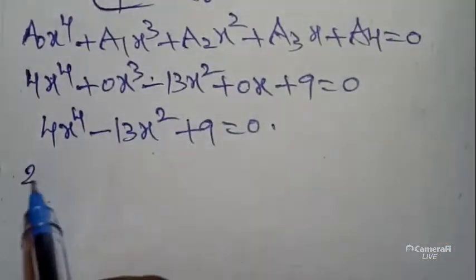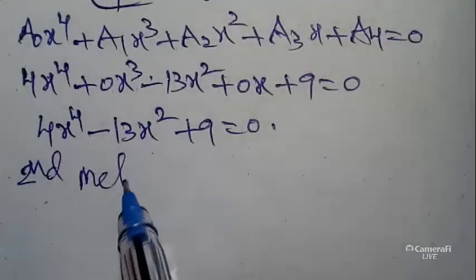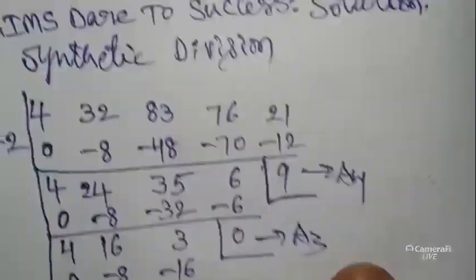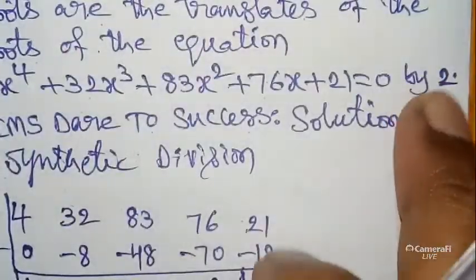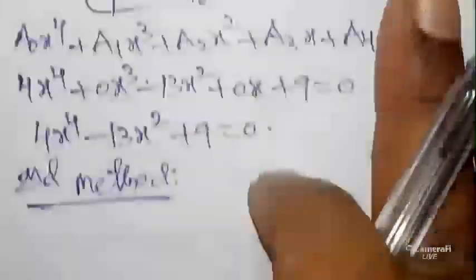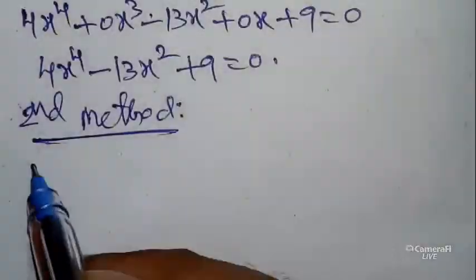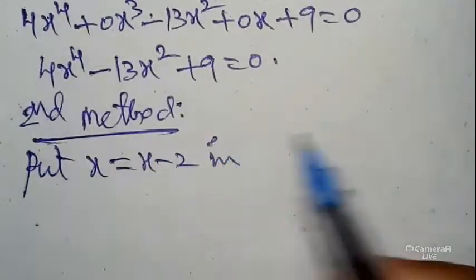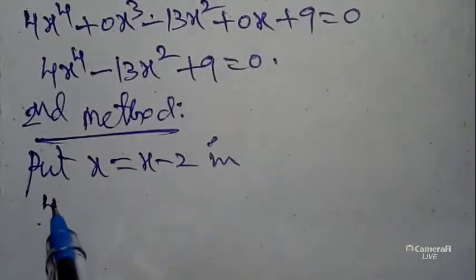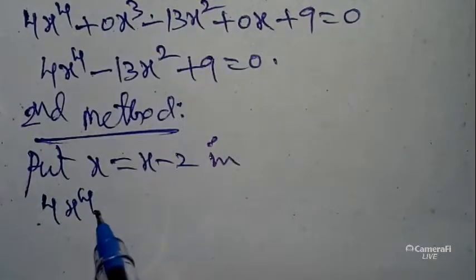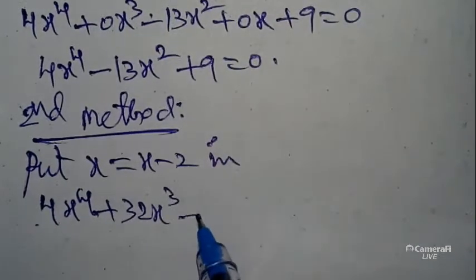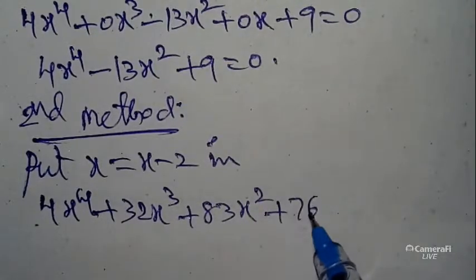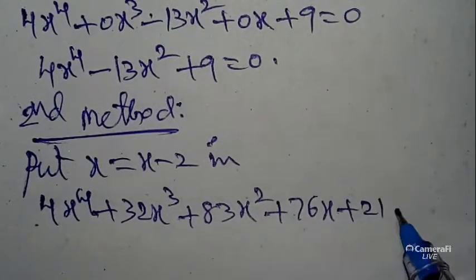One more method, second method I wanted to tell you. So it is one more time we will check it. It is by 2, take the opposite symbol, so substitute x = x - 2 in the given equation.